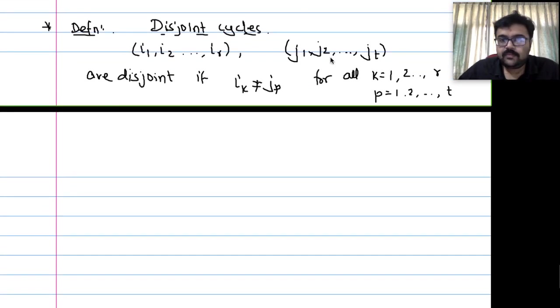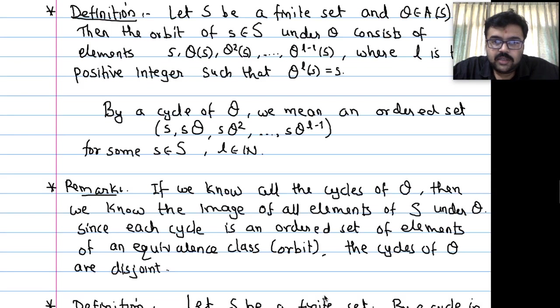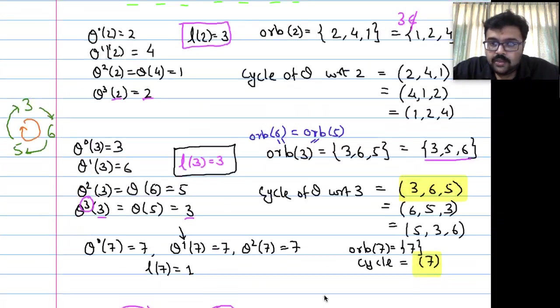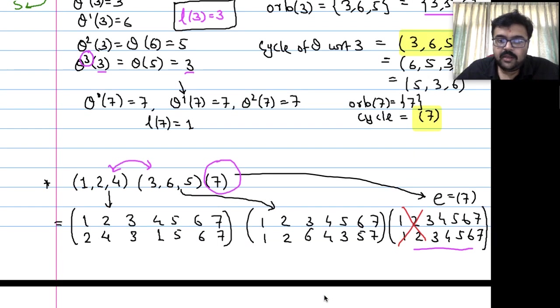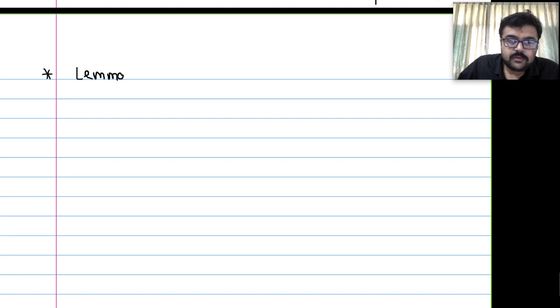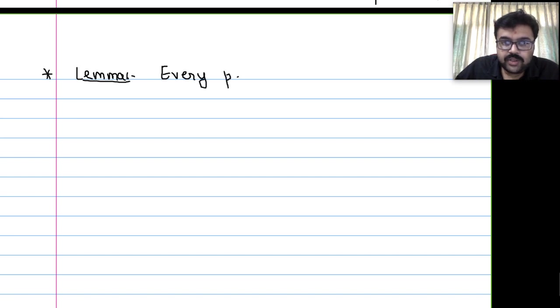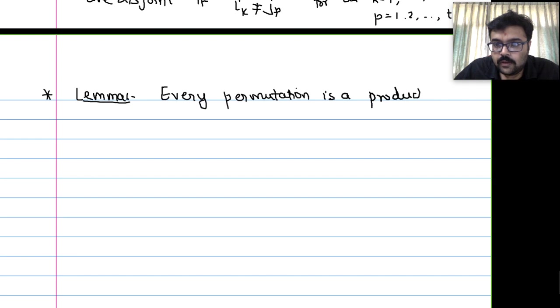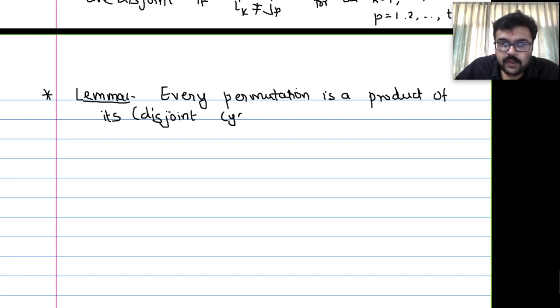Finally, the main lemma: Every permutation is a product of its disjoint cycles. In our example, theta has cycles (1,2,4), (3,6,5), and (7). We multiplied them and got back theta. Multiply them in any order — because they are disjoint, they commute — and we still get theta.